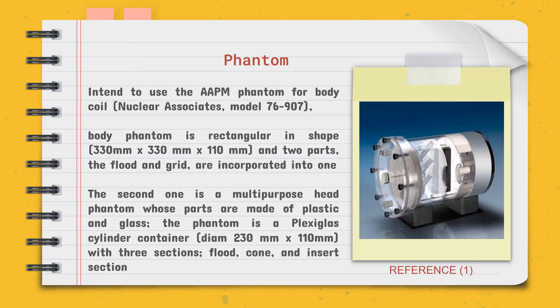The second is a multi-purpose head phantom made with plastic and glass. The phantom is a plexiglass cylinder with a diameter of 230 mm and 110 mm in length. It has three sections: the float, the cone, and the insert section.